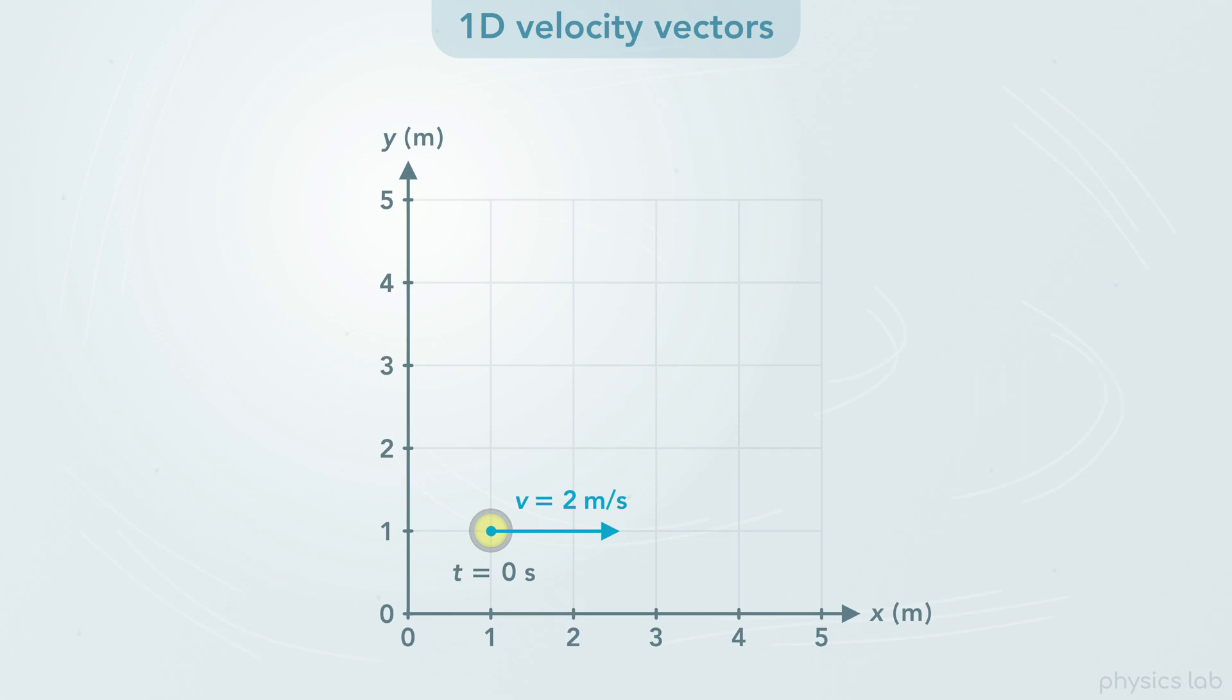So the velocity of the stone is 2 meters per second, but how long should this vector be? Drawing a velocity vector is a little different than drawing a displacement vector. Displacement vectors are unique because displacement includes an initial and a final point. So we could draw the vector connecting the points in 2D space.